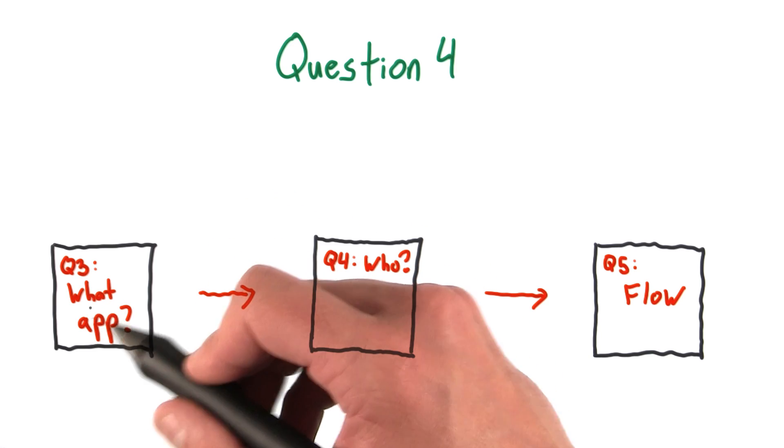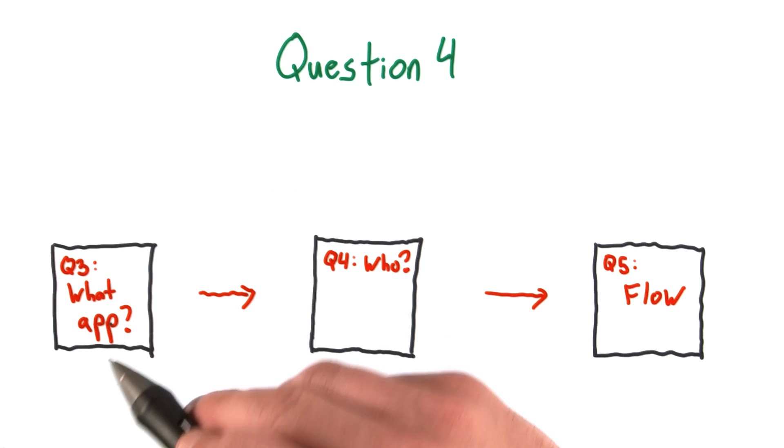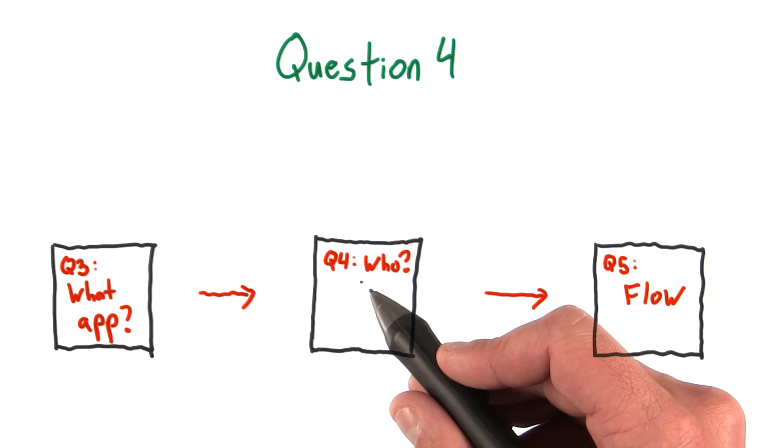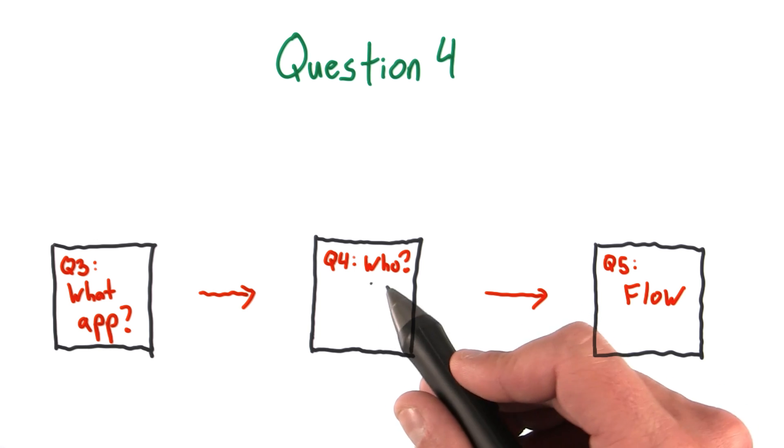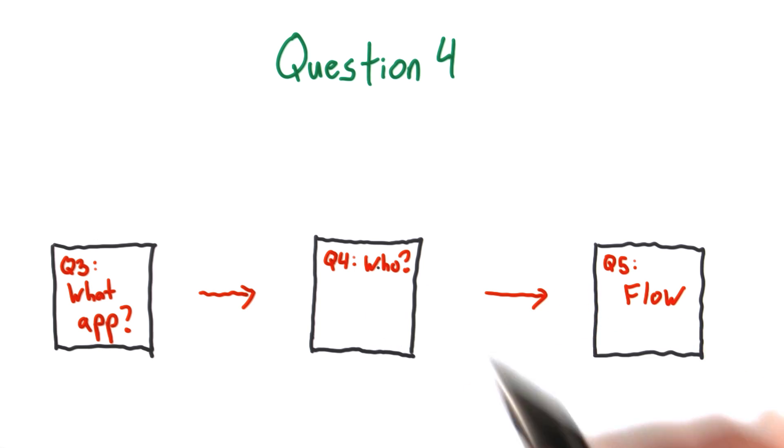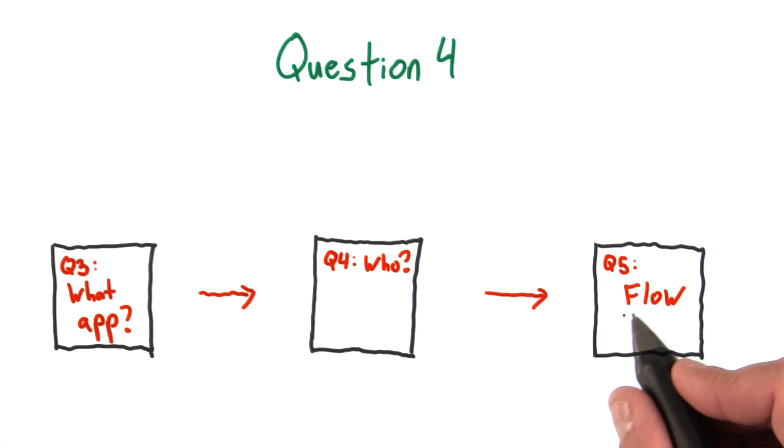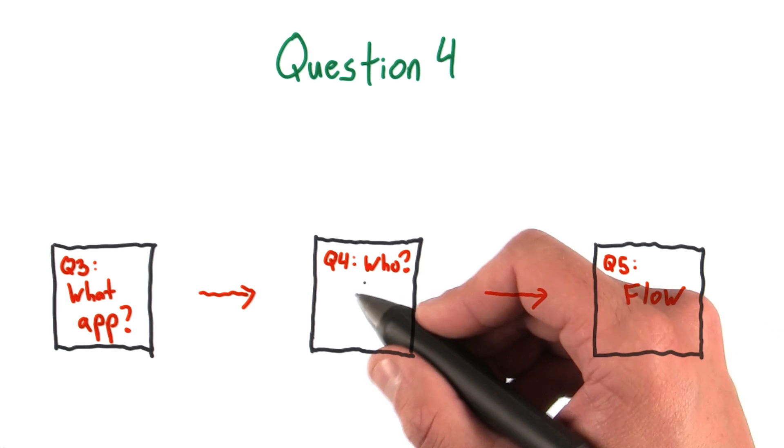So you just answered the question of what app you want to build for your final project. In this question, you're going to determine in more detail exactly who you're building this app for. And in the next question, you'll actually construct a high-level flow for this user.